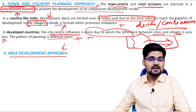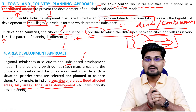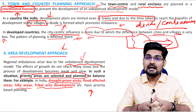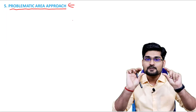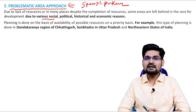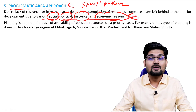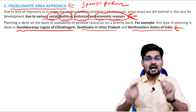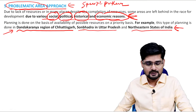In a country like India, developmental plans are limited even in towns, and the urban-rural divide persists due to the time taken for benefits to reach village level. In developed countries, city-centric influence reduces differences between cities and villages, creating a continuum of services. The area development approach targets specific area requirements — drought-prone area programs, flood-prone area programs, hill area development programs, and tribal area development programs — making planning area-specific based on local problems.